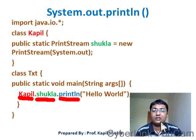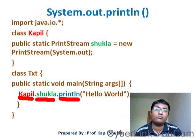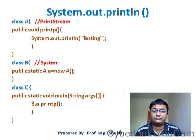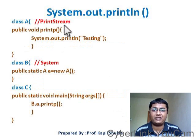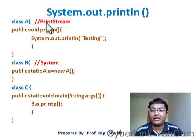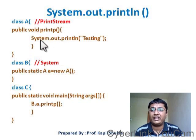To give a better simulation, we have created one more code. Here, class A is representing PrintStream and class B is representing System. In PrintStream (class A), we have created one function called printP, and in that we are printing 'testing only'.